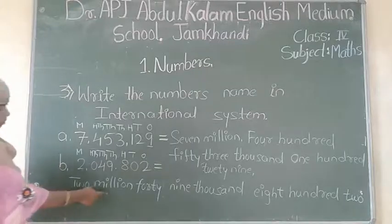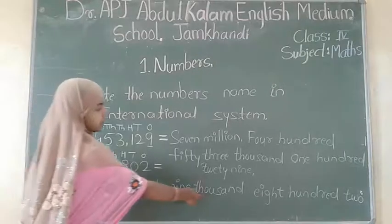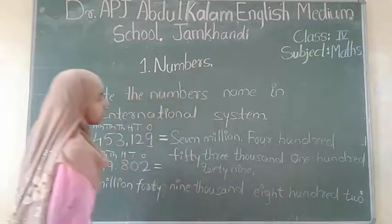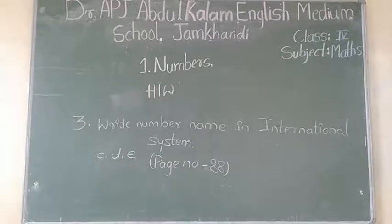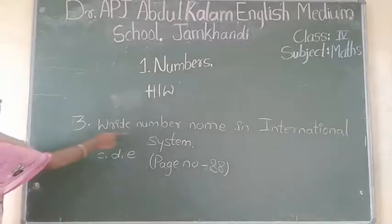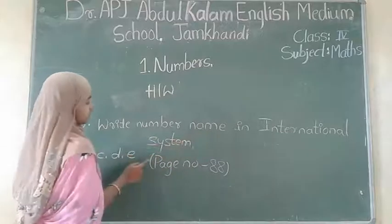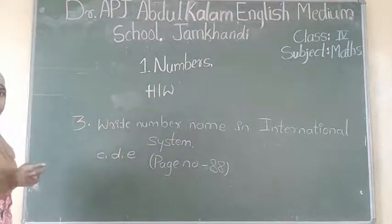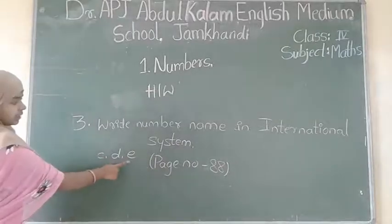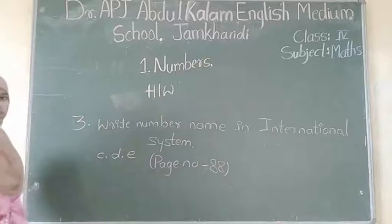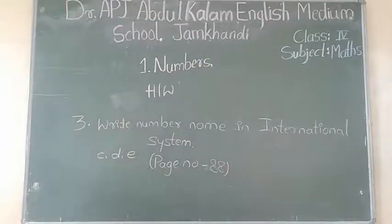Here is the number's name: 2,049,802. Write down these examples in your maths notebook. So students, write down the homework. Your today's homework is to write the number names in the international system. You have to solve C, D, and E on page number 88. Do this homework in your maths notebook and send it on WhatsApp.